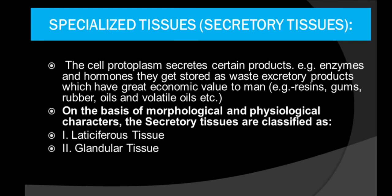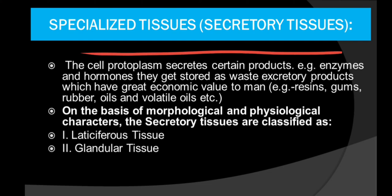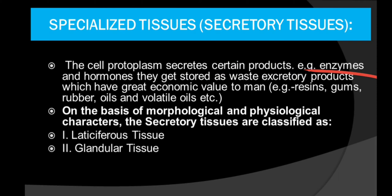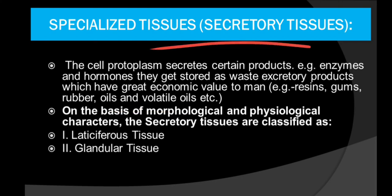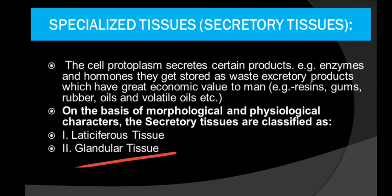Beside meristematic and permanent tissues, there are specialized tissues known as secretory tissues. The cells of these plants secrete certain products like enzymes and hormones, which get stored as excretory products with great economic value to humans. Examples include resins, gums, rubber, oils, and some volatile oils. On the basis of morphological and physiological characters, secretory tissues are classified as laticiferous tissues and glandular tissues.